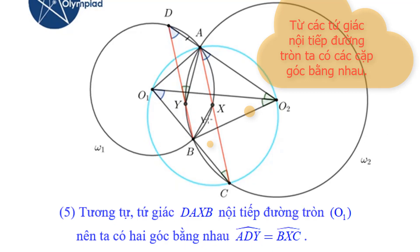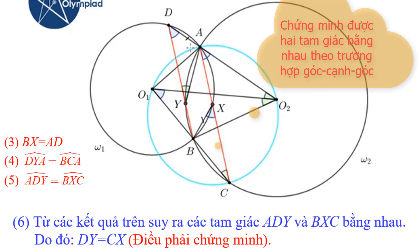And these two angles are equal too because DAXB is cyclic. These two triangles ADY and BXC are congruent. So CX is equal to DY. And we proved the problem. Thank you.